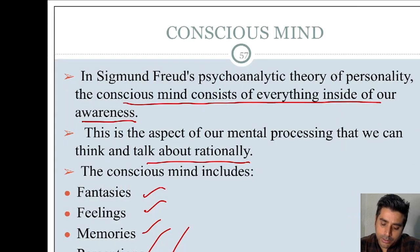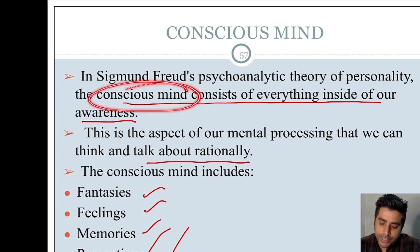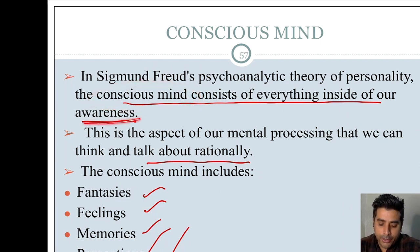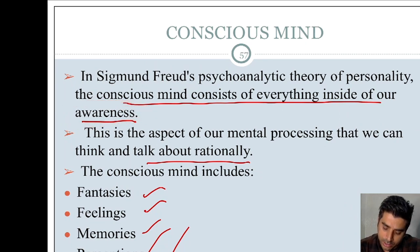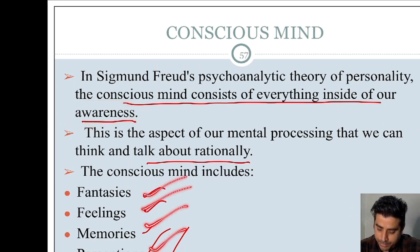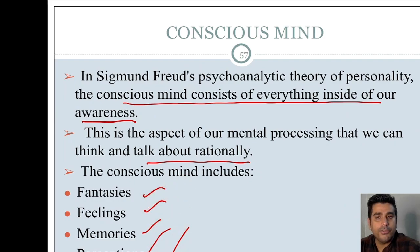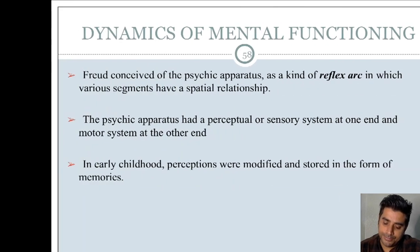The Conscious Mind is everything in our awareness. Conscious means we are aware of all the fantasy, feelings, memories, perceptions, and self-awareness. These all belong to the Conscious Mind.